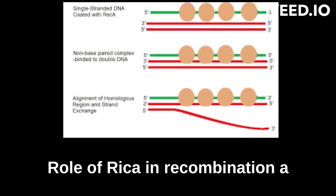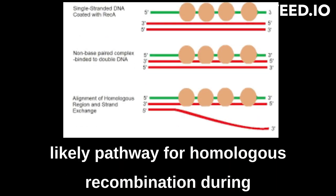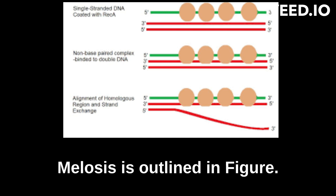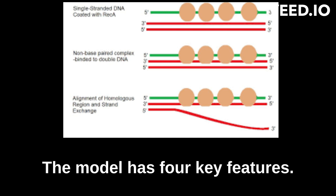Role of RecA in recombination. A likely pathway for homologous recombination during meiosis is outlined in the figure. The model has four key features.